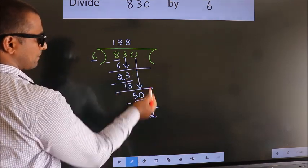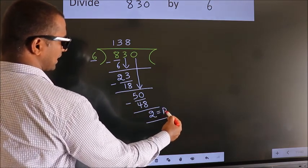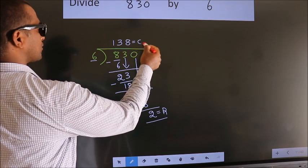No more numbers to bring down. So we stop here. This is our remainder. This is our quotient.